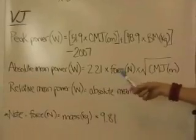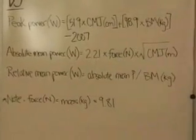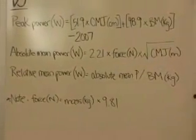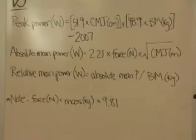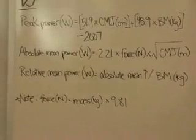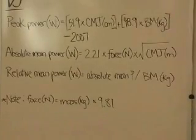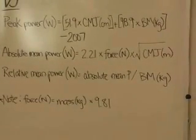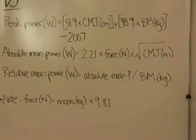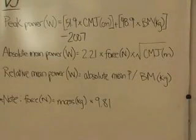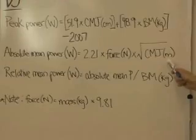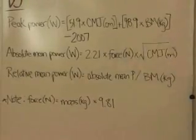Absolute mean power would be 2.21 times the force in newtons, and for this, that would be the individual's mass in kilograms times 9.81, and that gives his weight or force in newtons, times the square root of that counter-movement jump in meters, so this is different from the centimeters before.